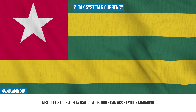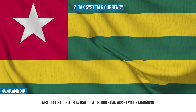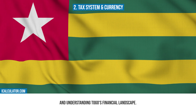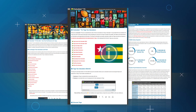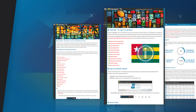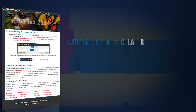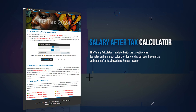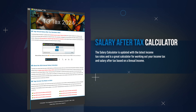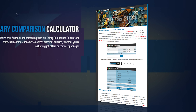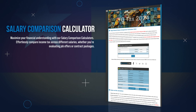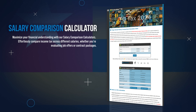Next, let's look at how iCalculator tools can assist you in managing and understanding Togo's financial landscape. iCalculator is home to a comprehensive suite of different tools to simplify and clarify your financial planning and decision-making. You can start by understanding your take-home pay with our salary after-tax calculator, which offers a clear view of your net income after all tax deductions. Compare different salaries with our salary comparison calculator, providing insights into where your earnings stand compared to previous years.